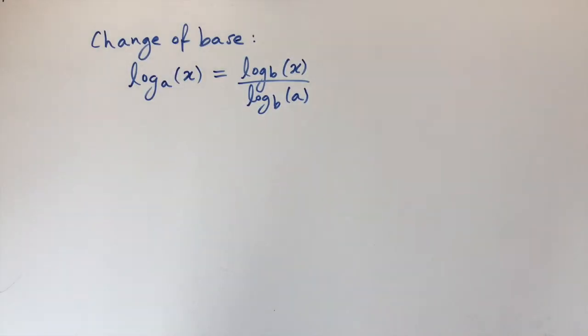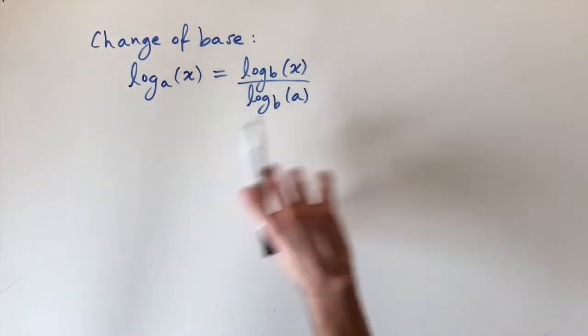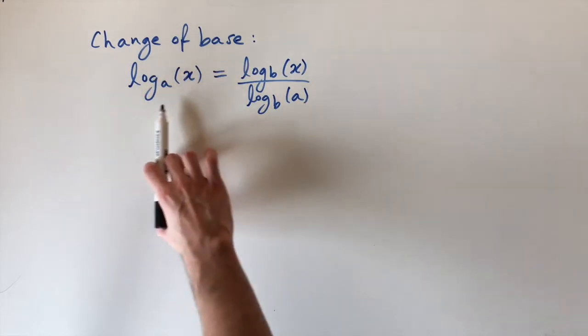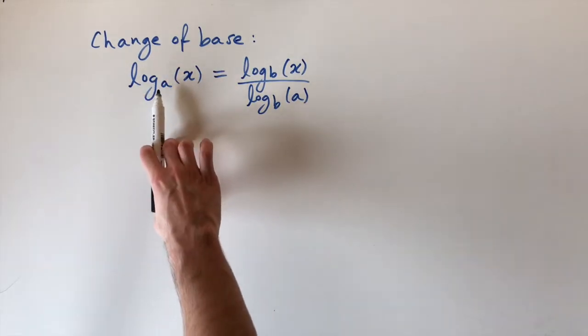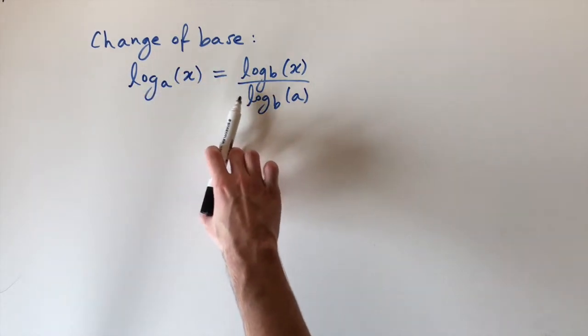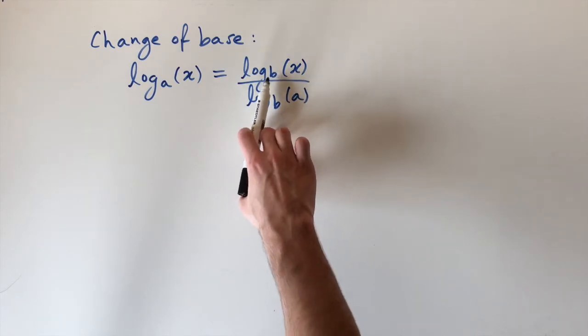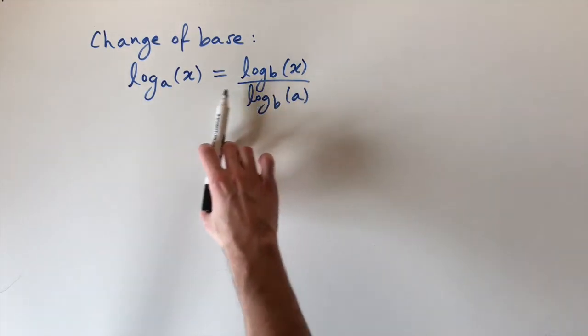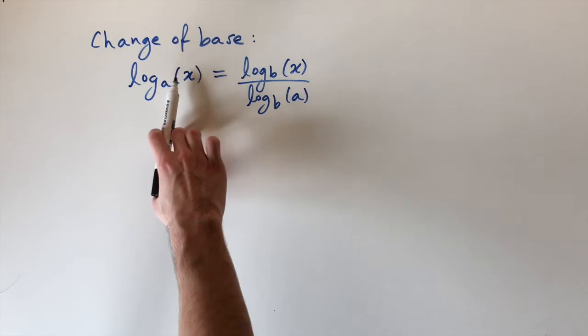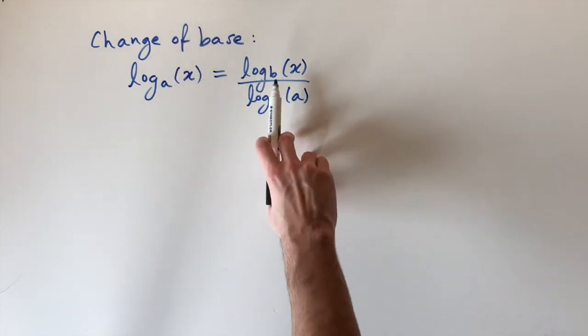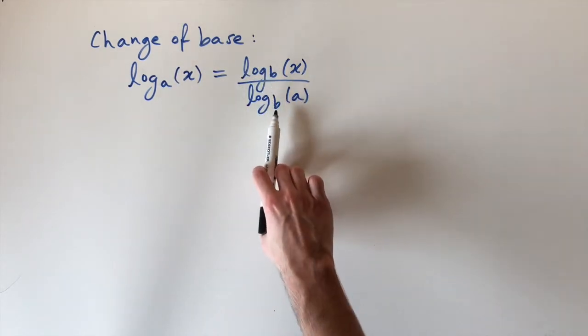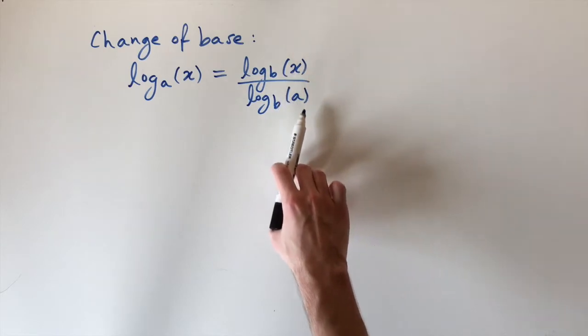Okay, so today we're looking at the change of base formula for logarithms. This states if you have a logarithm to some base of a, then you can change it and express it in terms of a new base, which we're calling b here, by using this formula. So log of a of x equals the ratio of these two logs where we've got the same base of b, but here we have x on top and here we have a on the bottom.